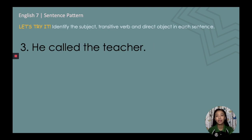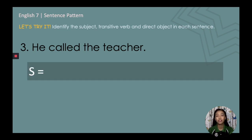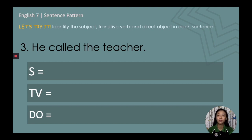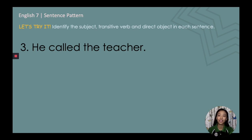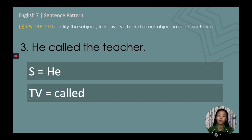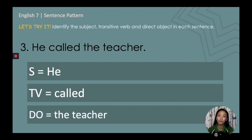Number three: 'He called the teacher.' Pause this video as you try to identify the subject, transitive verb, and direct object. The subject is the pronoun 'he.' The transitive verb is 'called.' And the direct object is 'the teacher.'